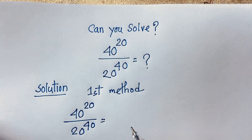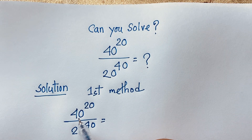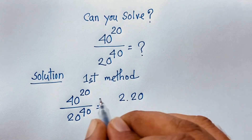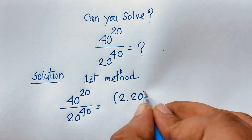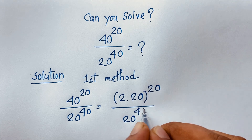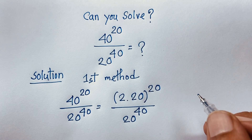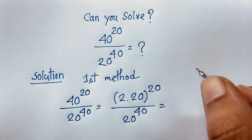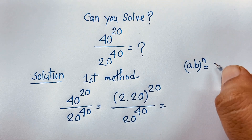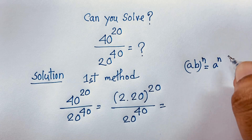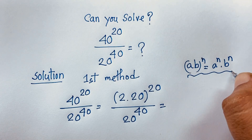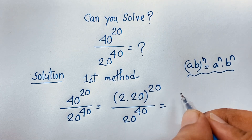Now I can see this 40 — it will be 2 times 20. So it will be (2 times 20) bracket power 20, over 20 power 40. Now using the exponential law (ab)^n = a^n times b^n, I can say it will be 2 to the power 20 times 20 power 20.